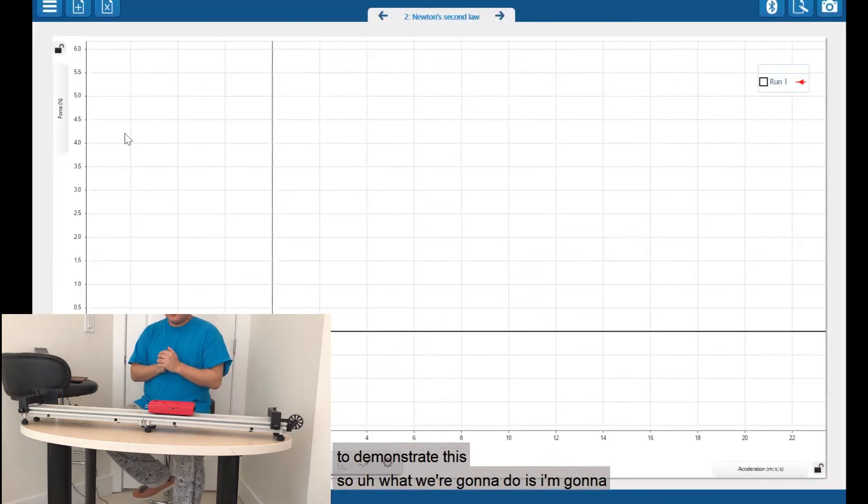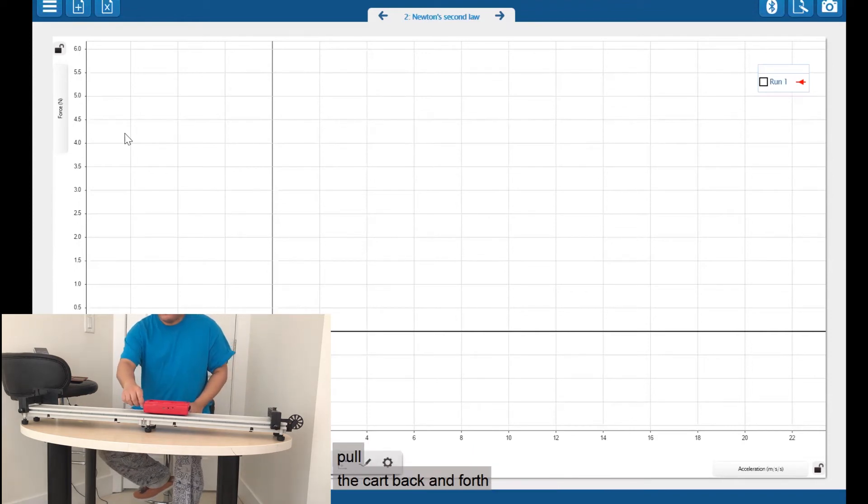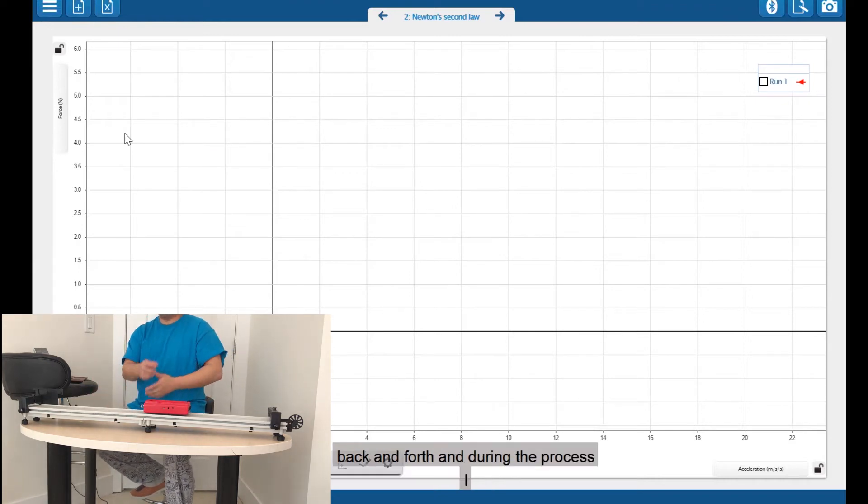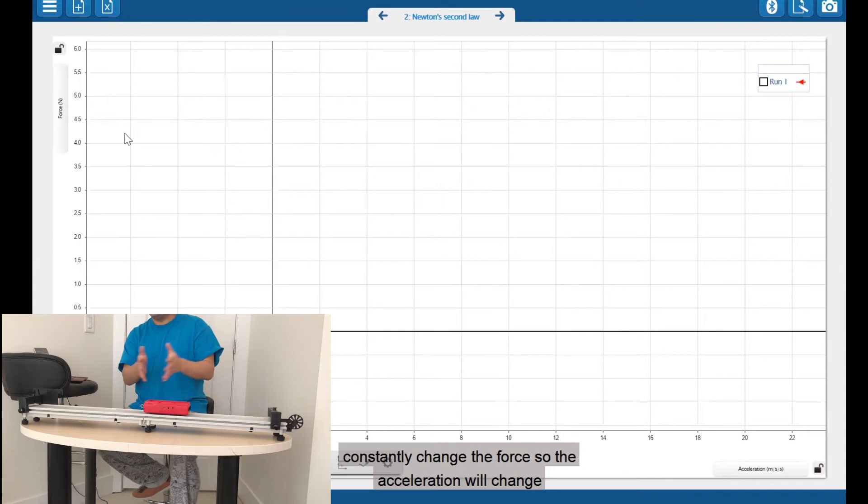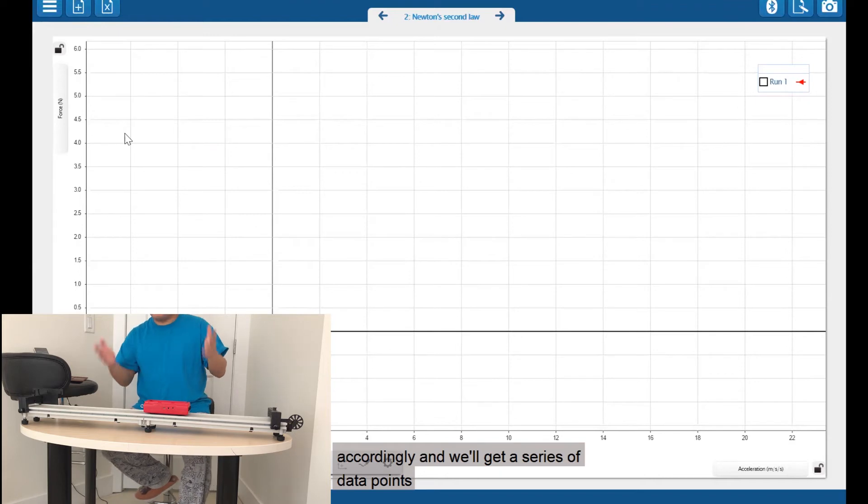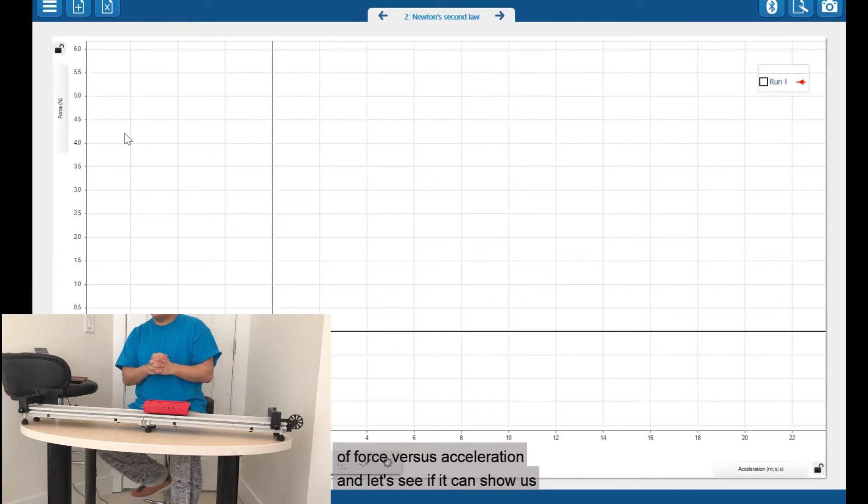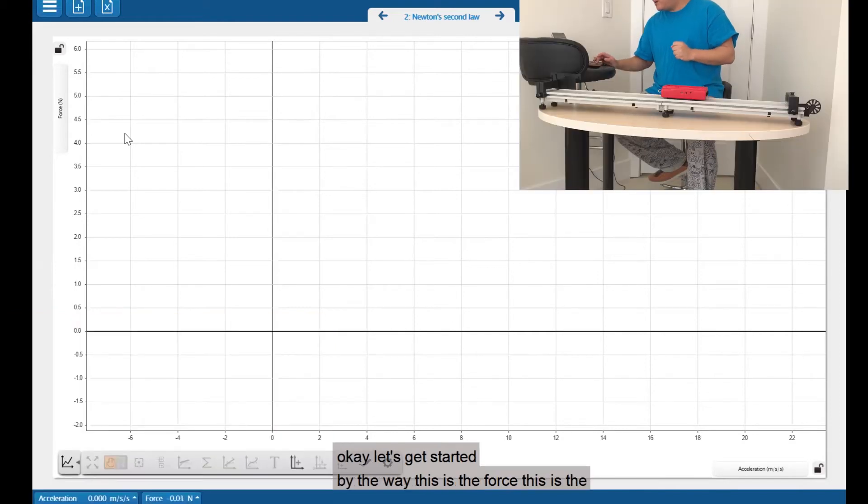So what we're going to do is I'm going to pull the card back and forth, back and forth. And during the process, constantly changing the force, so the acceleration will change accordingly. And we'll get a series of data points of force versus acceleration. And let's see if it can show us the relationship between force and acceleration. Let's get started.